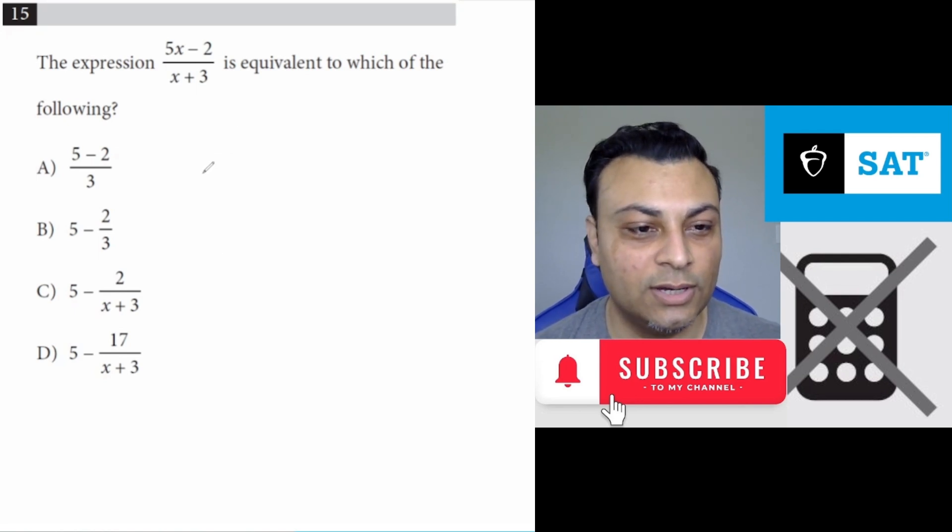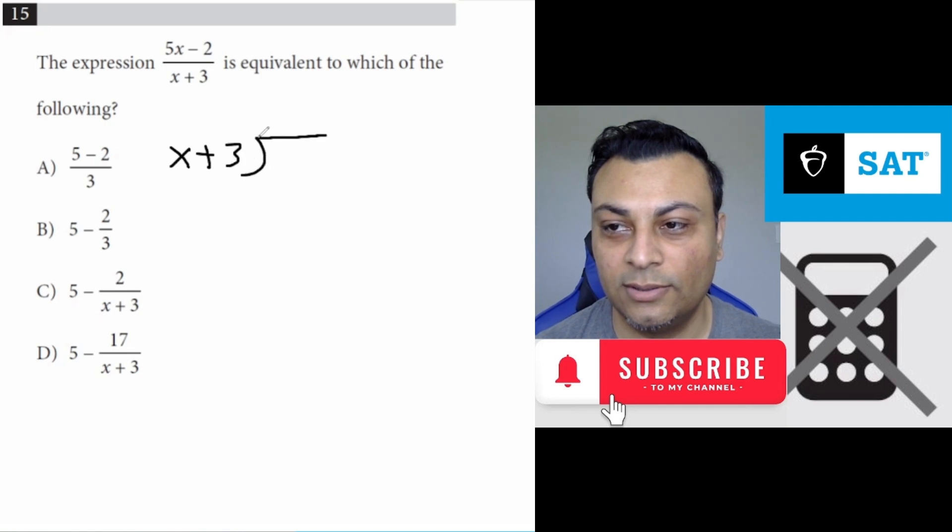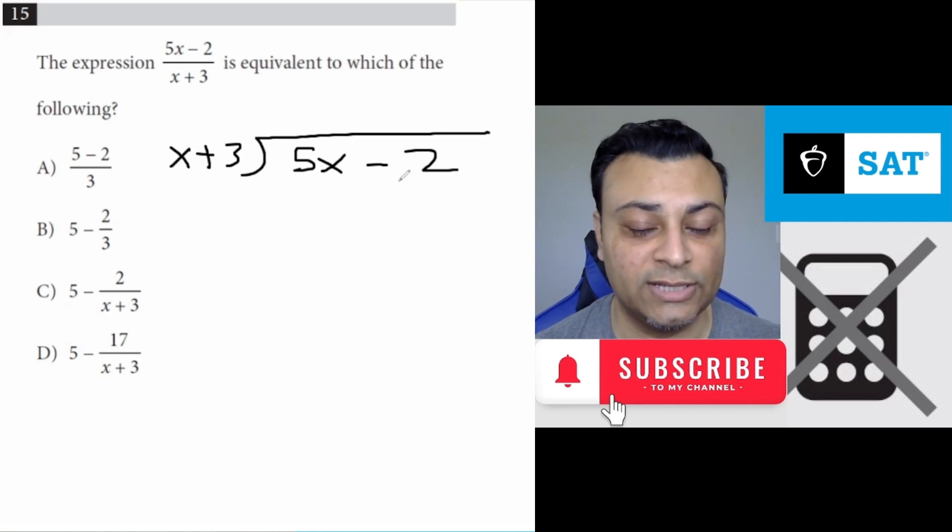One method is to use long division. And if you do long division, you would do x plus 3 here, 5x minus 2. It's always good to know long division before you take the SATs. 5x divided by x is 5.